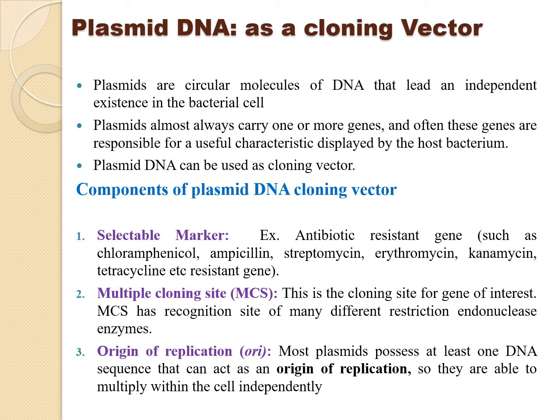A DNA cloning vector must possess three key components. The first is a selectable marker — examples include antibiotic resistance genes such as chloramphenicol, streptomycin, erythromycin, kanamycin, and tetracycline. The second is the multiple cloning site (MCS), which is the cloning site for the gene of interest and contains recognition sites for many different restriction endonuclease enzymes, which are important for the ligation and cutting steps of gene cloning.